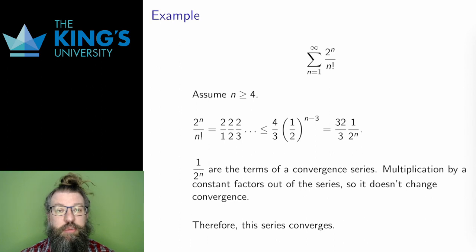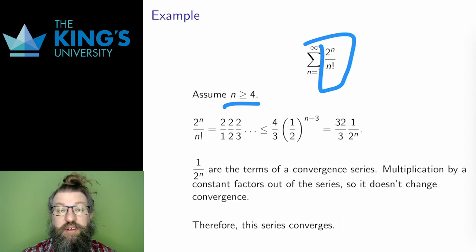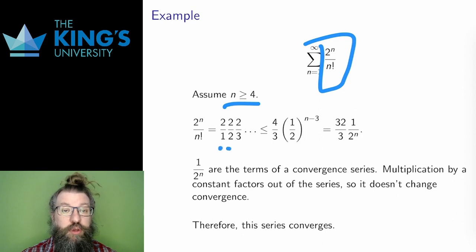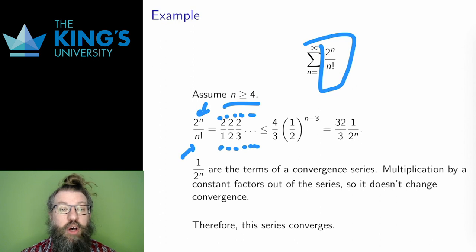Here is a trickier example. The terms are 2^n over n factorial. I'm going to assume that n is at least 4 — remember that this comparison only needs to be true past a certain point, so this is a fine assumption. Well then, 2^n over n! can be split into 2/1 times 2/2 times 2/3, and so on. The exponential and factorial have the same number of multiplications, but the exponential is just 2 multiplied by itself over and over again, while the factorial is all of the numbers up to n multiplied together. So I've just grouped those multiplications as 2/1, 2/2, 2/3, all the way up to 2/n.